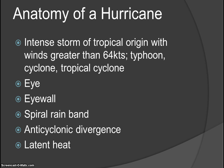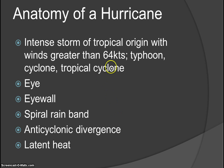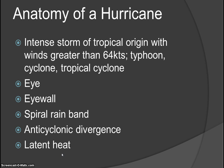The anatomy of a hurricane: it is an intense storm of tropical origin with winds greater than 64 knots. Typhoon, cyclone, tropical cyclone — these are all names for what we call a hurricane, just in different parts of the earth. There is an eye, an eye wall, and spiral rain bands. Anticyclonic divergence aloft, and latent heat is the heat engine that drives these — evaporation off the ocean releases a ton of energy into the atmosphere.